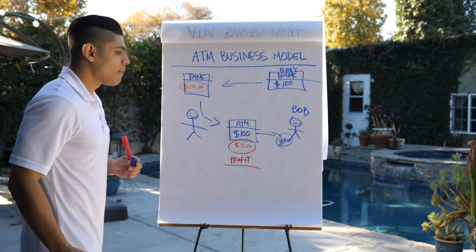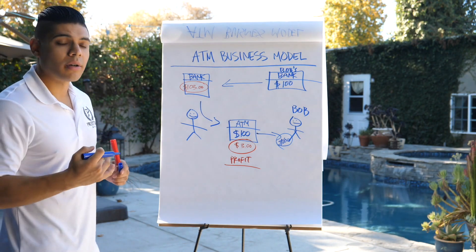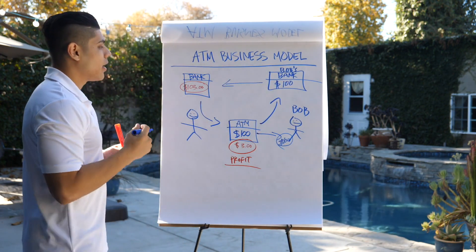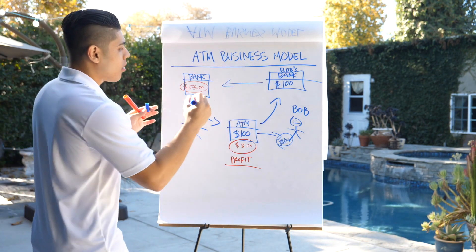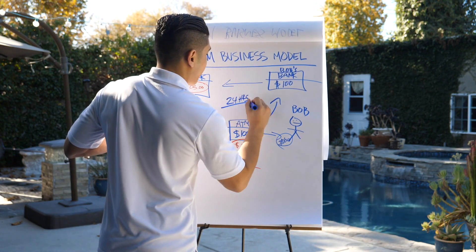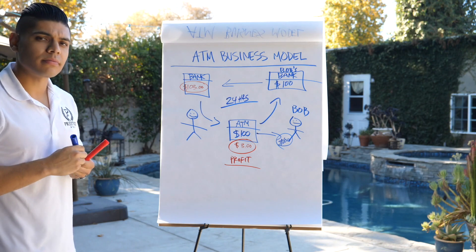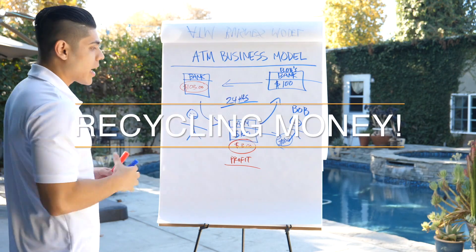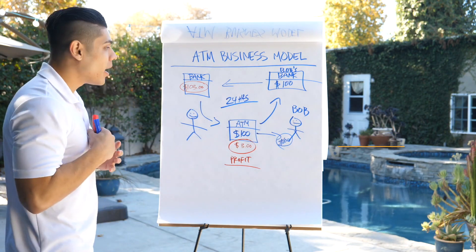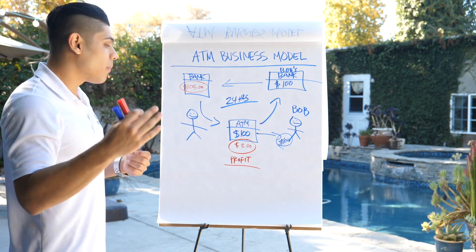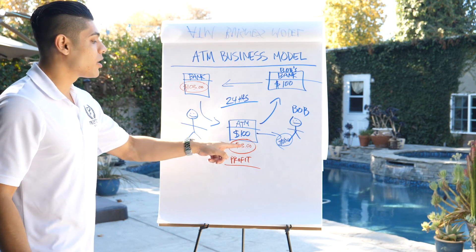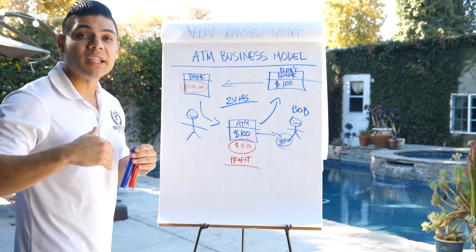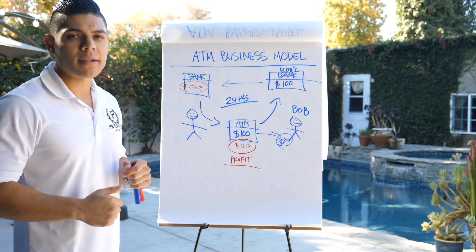You're going to put that hundred bucks back into your ATM machine. Another customer comes along, uses your machine, it debits their account, credits your account, and that's where your money starts coming from. It takes around 24 hours for your money to show back up in your bank account, which is pretty fast. This is basically the ATM business model — I like to call it recycling money. You're never losing money; you're also providing a three dollar surcharge for them to use your machine. Now that you know the business model, we can go into deeper detail. I'll see you on the next module.